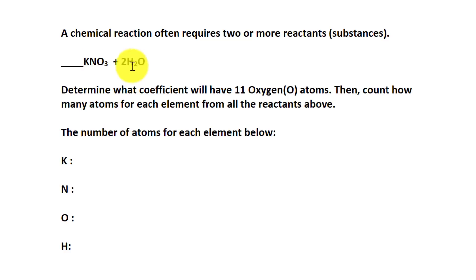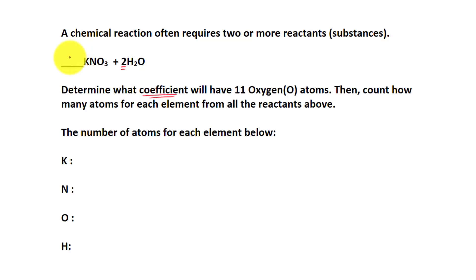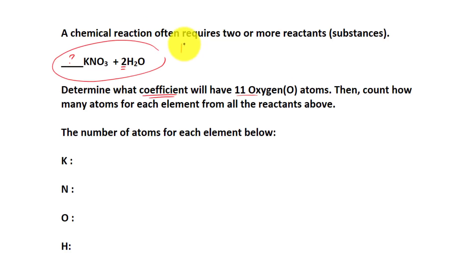We have two reactants. The task is to determine the coefficient. Notice water has a coefficient of two, and this one we don't have the coefficient. So what coefficient will give us 11 oxygen atoms? The whole entire thing has 11 oxygen atoms — 11O.